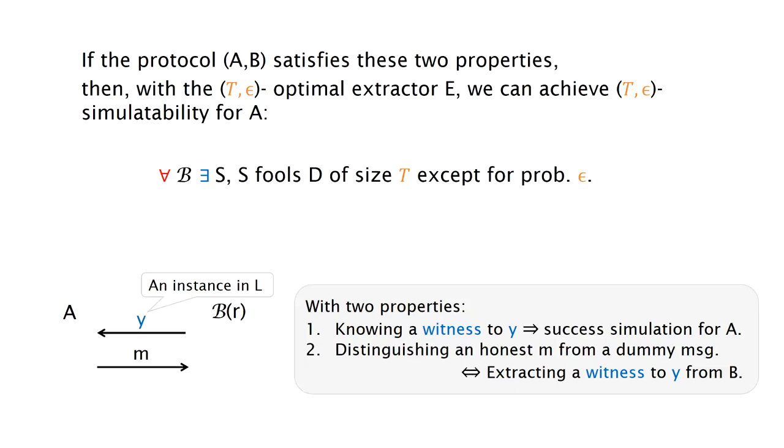And now if the protocol AB satisfies these two properties, then with the T-epsilon optimal extractor E, we can achieve T-epsilon simulatability for A. Here the simulator simply applies the extractor and tries to extract the witness to Y. And if the extractor succeeds, then we are done. And if the extractor fails, then the simulator can send back a dummy message, which is indistinguishable from the real world. This is because of the second property of the protocol AB.